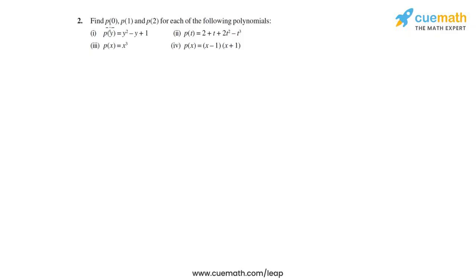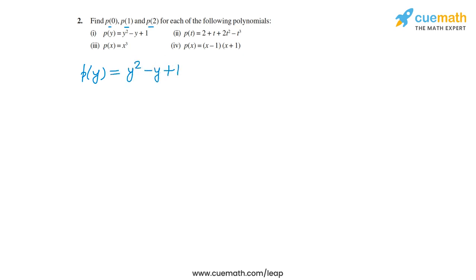In the second question, I have to find p(0), p(1), and p(2) for each of these four given polynomials. Let's first start with the first one: p(y) is equal to y squared minus y plus 1. Let's find out p(0), p(1), and p(2) for this polynomial.